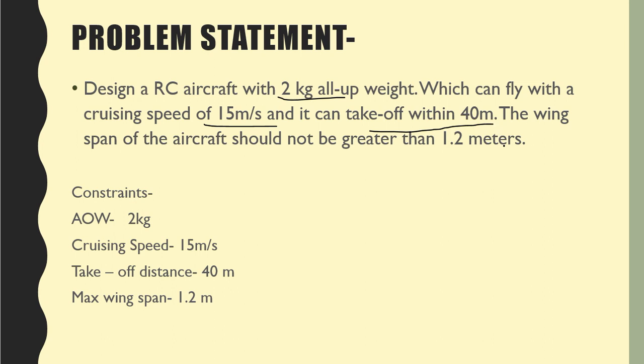These are the objectives that I want to see in my plane. Next to that we have an objective for the size as well, so the constraint for the size is the wingspan of the aircraft should not be greater than 1.2 meters. These are the constraints for my aircraft. The majority design constraints that are oriented to the purpose or the mission of the aircraft are these.